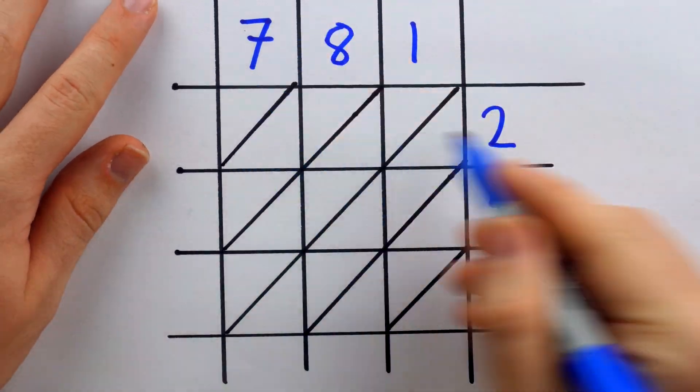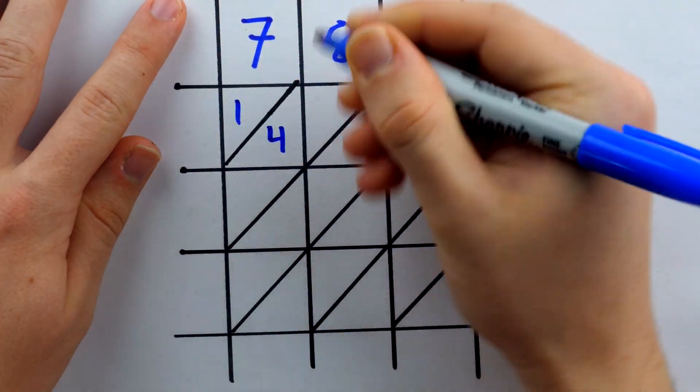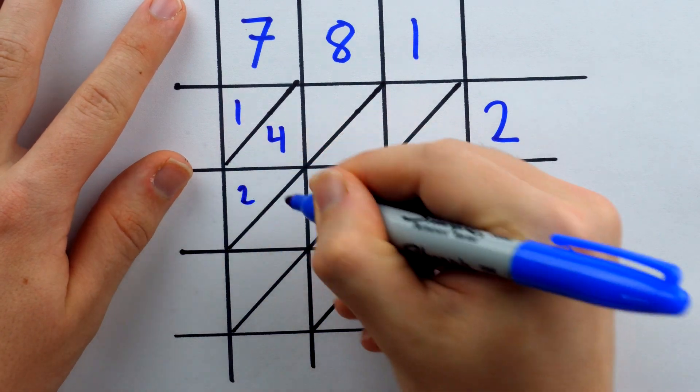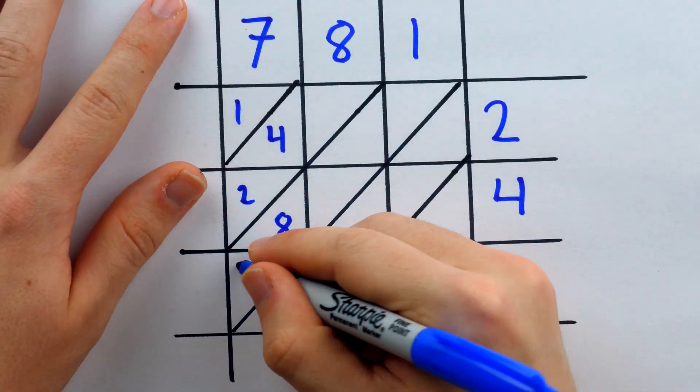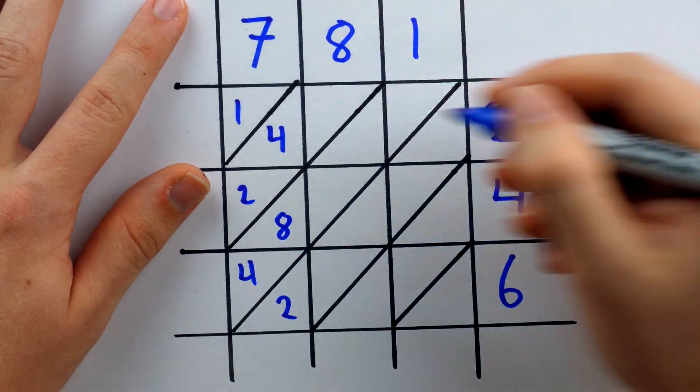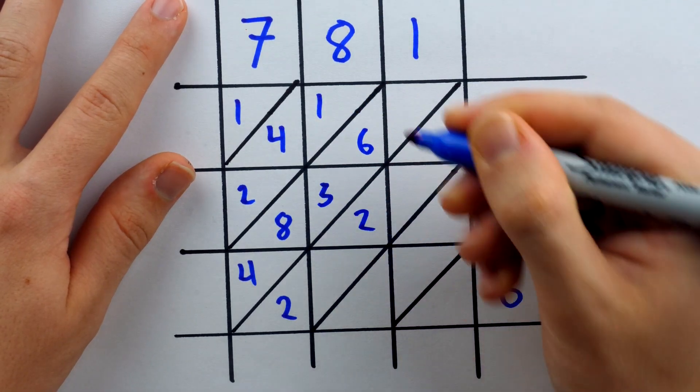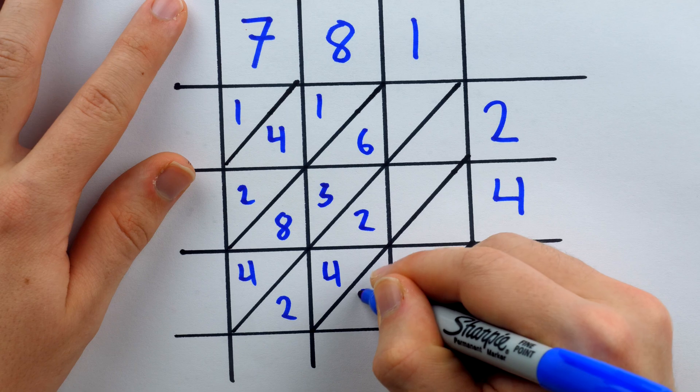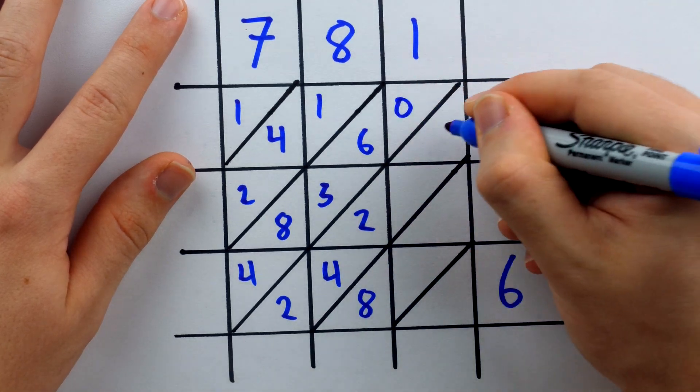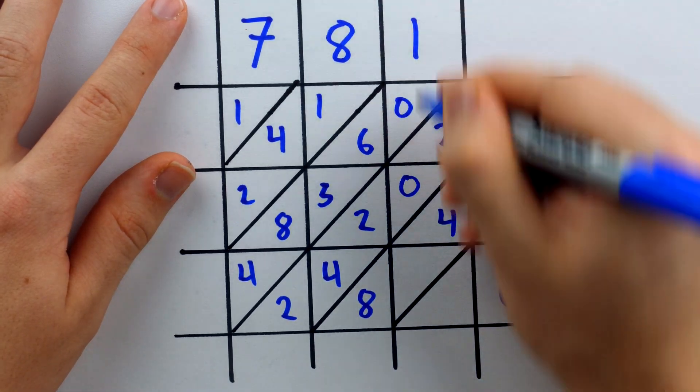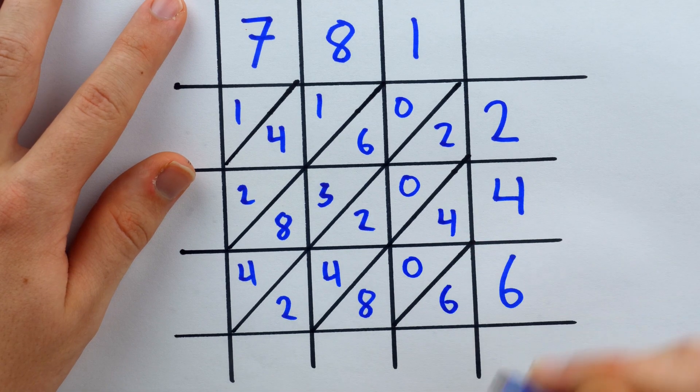Beginning to go through the multiplication, 7 times 2 is 14, 7 times 4 is 28, 7 times 6 is 42, 8 times 2 is 16, 8 times 4 is 32, 8 times 6 is 48, 1 times 2 is 2, 1 times 4 is 4, and 1 times 6 is 6.